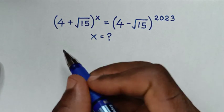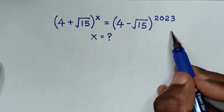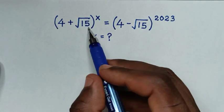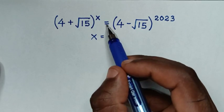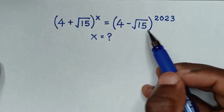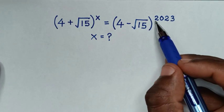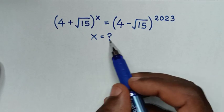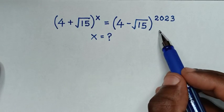Hello, you are welcome to solve this math problem, which is: (4 plus square root of 15) bracket to the power of x is equal to (4 minus square root of 15) bracket to the power of 2023. We need to find the value of x from this equation.